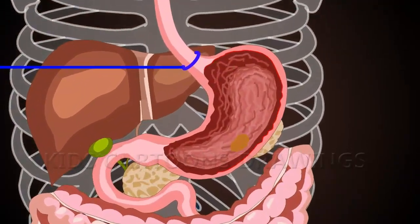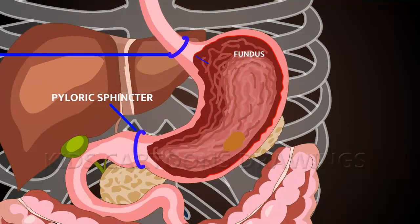The stomach has various internal anatomical parts: cardia, fundus, body, and antrum. The muscular outlet of the stomach is called the pylorus. Stomach surface folding is called rugae.